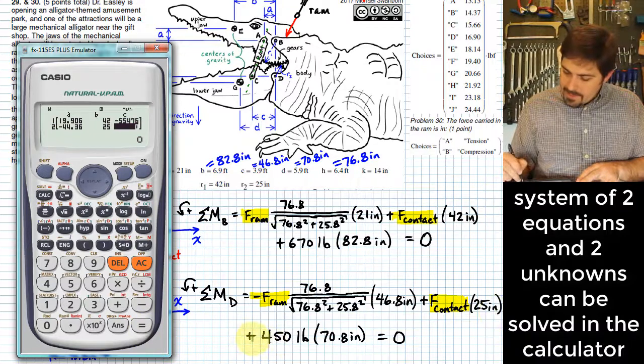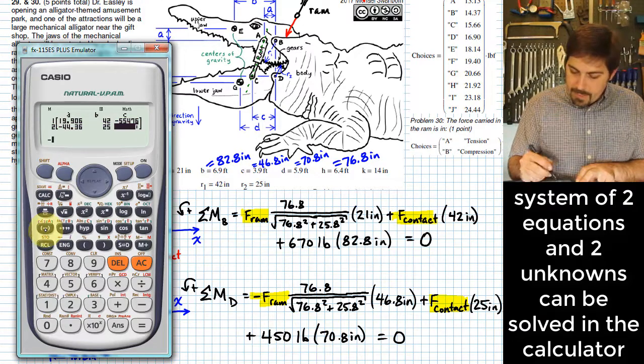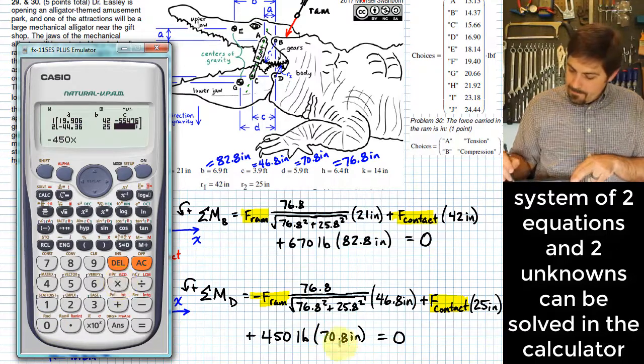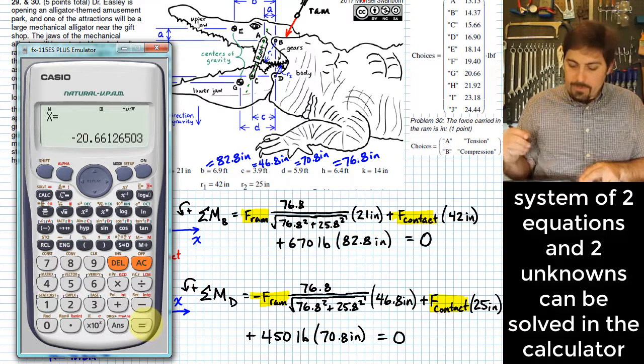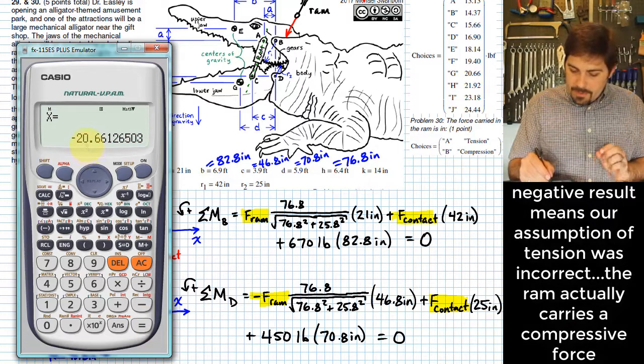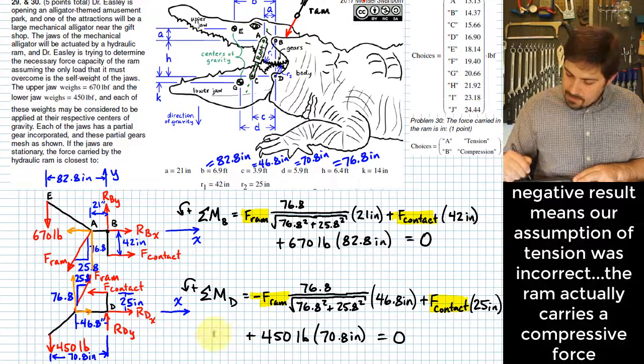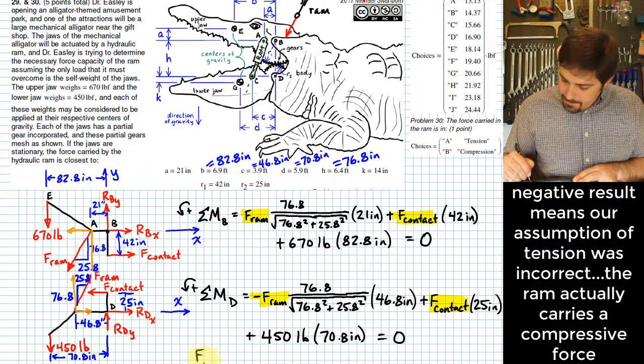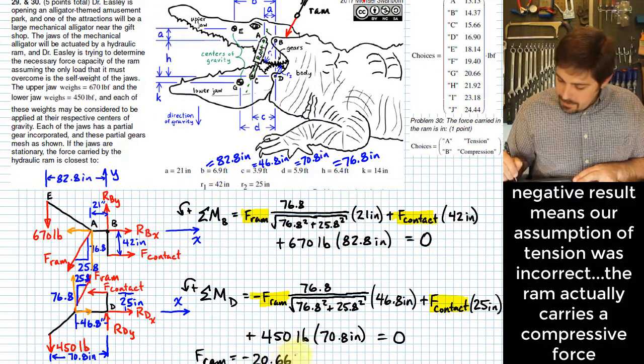And then lastly, remember that just like the last time, this constant term needs to be on the other side of the expression. So we negate it from what we have, 450 times 70.8. And when I've got all those entered, I can hit equals, and it gives me here that my first value is negative 20.66. That would be FRAM. So FRAM, negative 20.66 pounds.